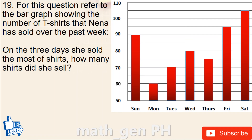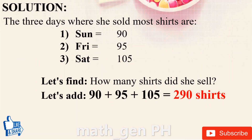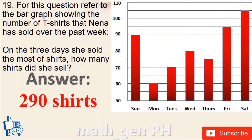Question number 19: refer to the bar graph showing t-shirts Naina sold over the past week. On the three days she sold the most shirts, how many did she sell? Values: Sunday 90, Monday 60, Tuesday 70, Wednesday 80, Thursday 75, Friday 95, Saturday 105. The three highest days are Sunday (90), Friday (95), and Saturday (105). Total: 90 plus 95 plus 105 equals 290 shirts. Answer: 290 shirts.